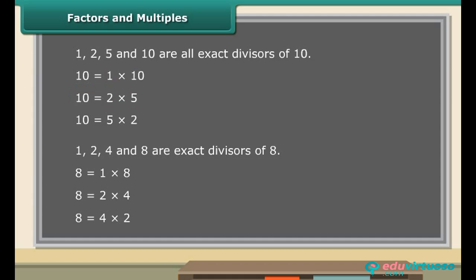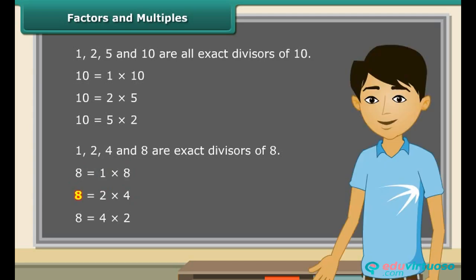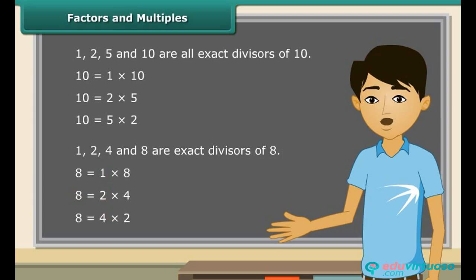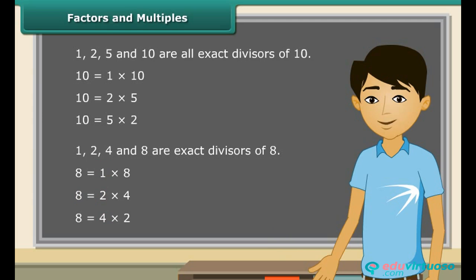Therefore 10 is a multiple of 1, 2, 5 and 10. Similarly, number 8 is a product of 1 and 8, or 2 and 4. Therefore 8 is a multiple of 1, 2, 4 and 8. Thus we can say that a number is a multiple of each of its factors.